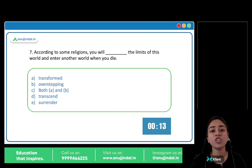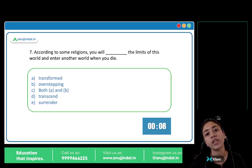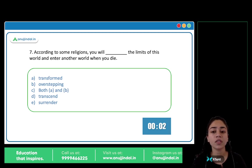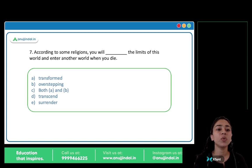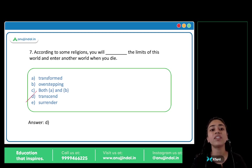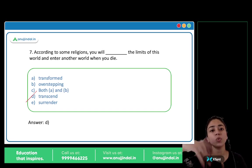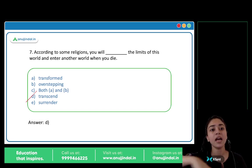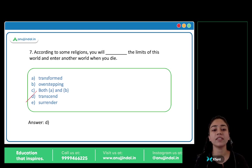According to some religions, you will blank the limits of this world and enter another world when you die. The answer is option D, transcend. Transcend means to rise above, to go beyond the limits. You will transcend the limits of this world and enter another world. So transcend is the answer.